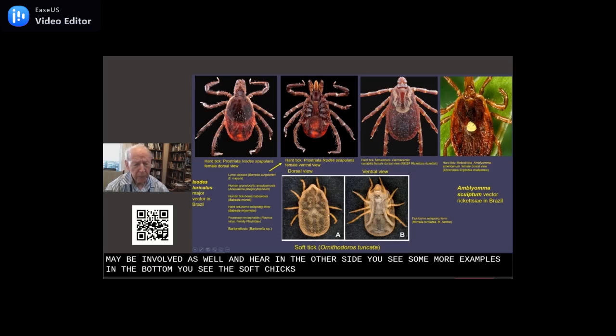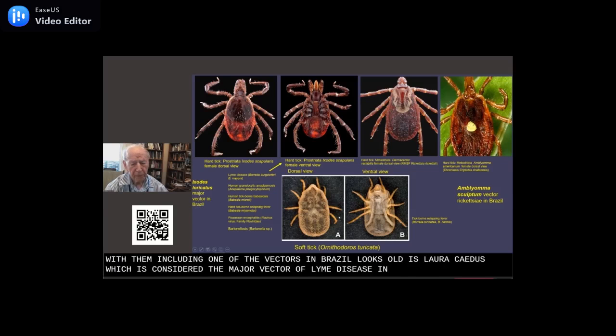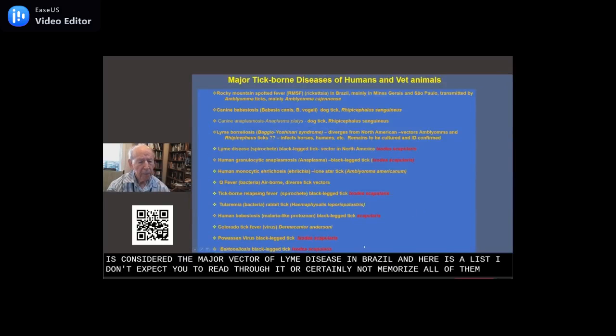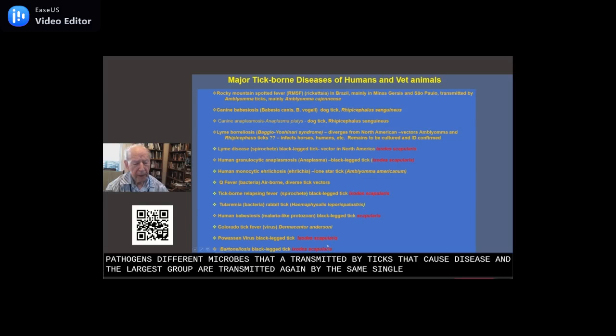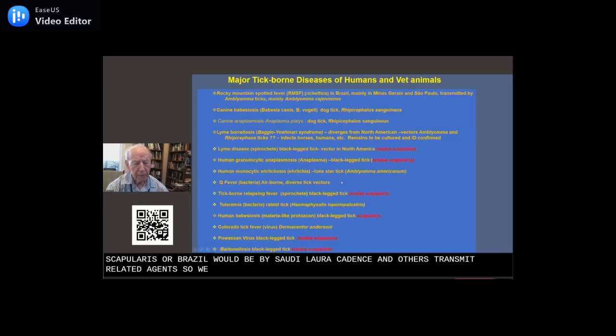Here you see some more examples. At the bottom you see the soft ticks. These are fast feeders with very long lives. Here on the left you see some of the diseases associated with them, including one of the vectors in Brazil, Ixodes loricatus, which is considered the major vector of Lyme disease in Brazil. Here is a list highlighting the great variety of different pathogens, different microbes transmitted by ticks that cause disease.